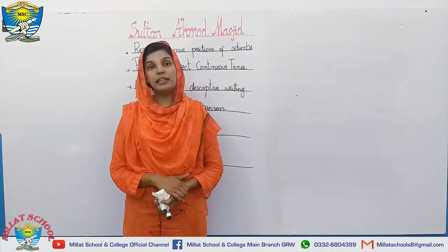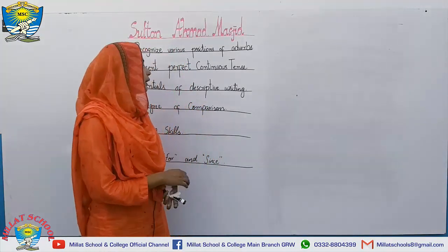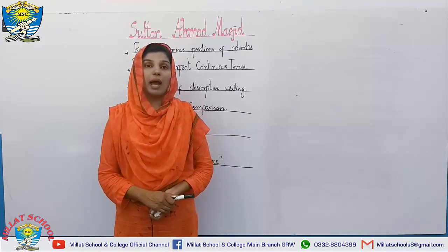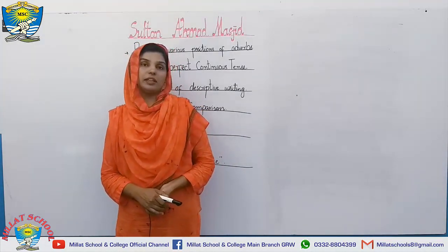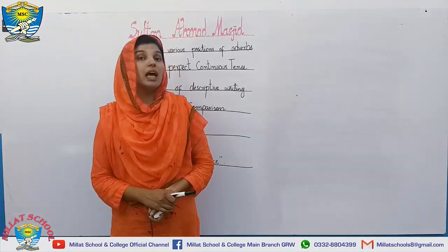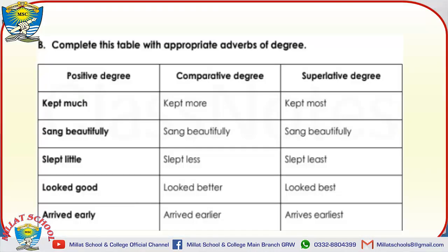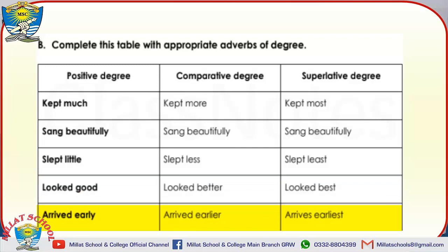The next grammar activity is the degree of comparison. They have given you the positive degree and you have to write the comparative and superlative degrees. 'Much' — more — most. 'Sang beautifully' — sang more beautifully — sang most beautifully. 'Slept little' — slept less — slept least. 'Looked good' — looked better — looked best. 'Arrived early' — arrived earlier — arrived earliest.